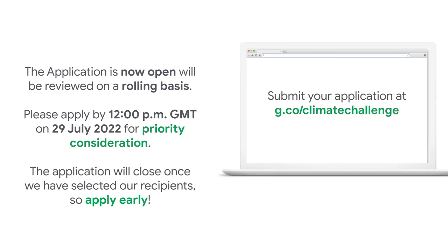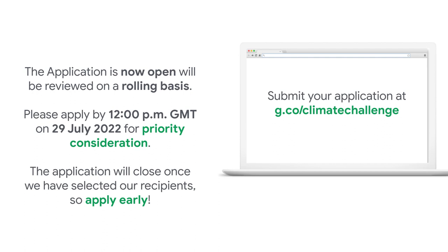We'd like to share some final tips and reminders. The application for the challenge is now open and you can find a link to the application at g.co.climatechallenge. Applications will be reviewed on a rolling basis and the application window will remain open until all selections are made. Priority consideration will be given to applications received by 12 p.m. GMT on 29th of July 2022. As we are funding applications on a rolling basis, we highly encourage you to apply early. Google.org will invite high-potential organizations to submit additional project information and attend an interview. After 29th of July, the application will remain open and submissions will be reviewed on a rolling basis, but we'll close the applications once we have selected our recipients.